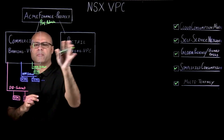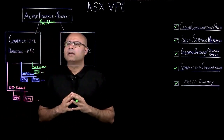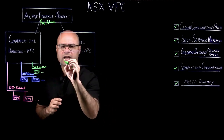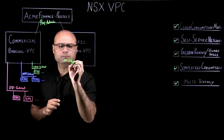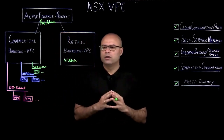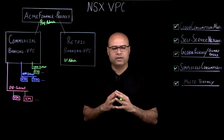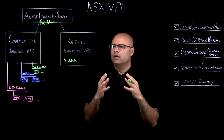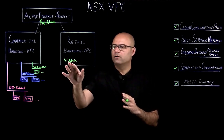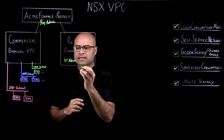In this demo we will showcase two personas. The first is the project admin, who can see all the VPCs in the environment related to that project. The second persona is the VI admin, who is the application owner and has access to only their specific VPC.